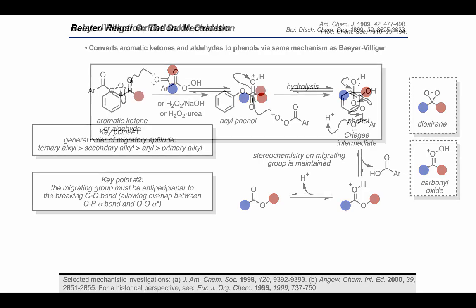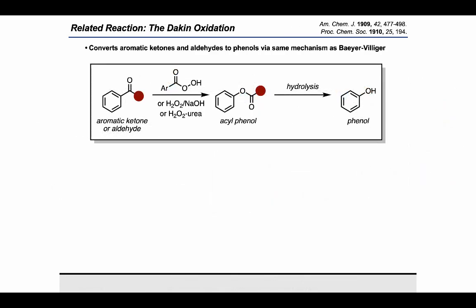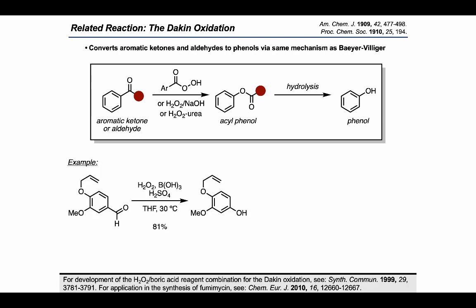I want to pause to show a related reaction called the Dakin oxidation. In this reaction, we take an aromatic ketone or aldehyde and subject it to the same conditions as a Bayer-Villiger oxidation to get an acylphenol, which can then be hydrolyzed to get a free phenol. For example, an allylated vanillin derivative can be treated with hydrogen peroxide, boric acid, and sulfuric acid — conditions found to be effective for this Dakin oxidation — to arrive directly at the phenol product.